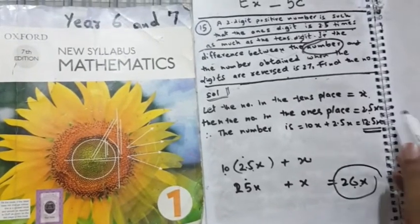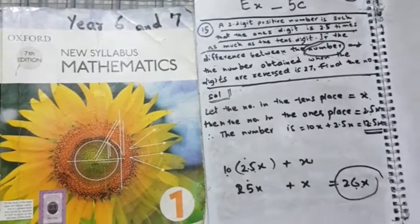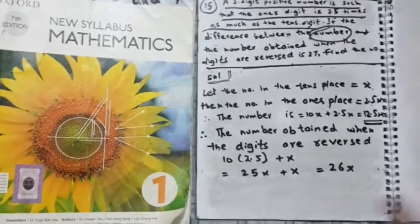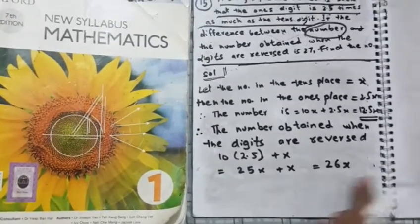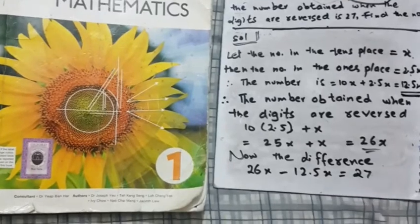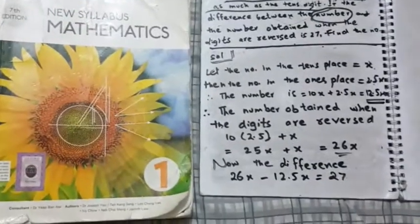Now the difference between the reversed number and 12.5 will be taken. I'll write clearly now. I'll take the difference of 26x and 12.5. The difference will be 27. The rest of the solution is in the description.